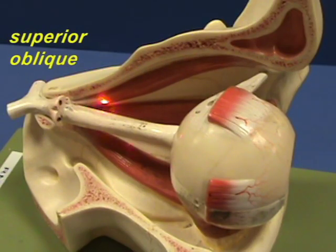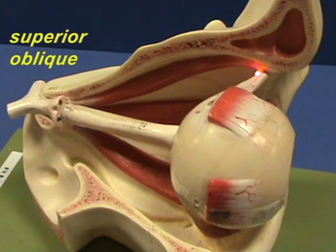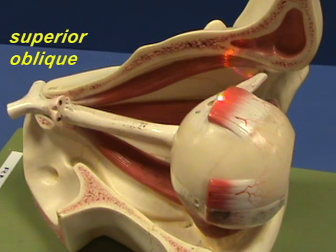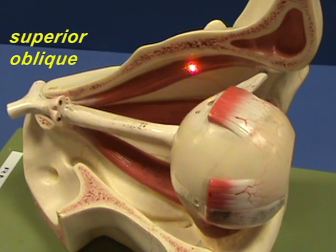The superior oblique muscle has an origin on the body of the sphenoid, anterior and medial to the optic canal. You can see the fibers going over here to the medial superior corner of the orbit, going through a tendinous slip, then changing directions and attaching to the posterior quadrant of the eyeball. The superior oblique muscle depresses, abducts, and medially rotates the eyeball.